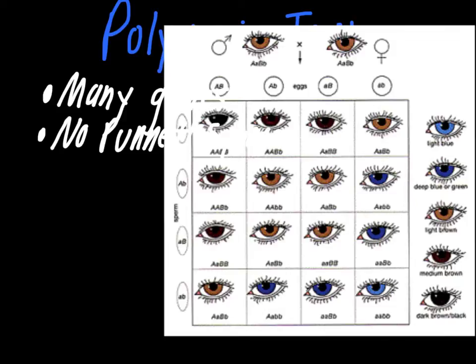With a problem like this, you could technically do a Punnett square, but it becomes much more complicated than the problems we've been working on in class. Not to mention, we're not exactly sure this is even how eye color is controlled — there's still some debate genetically over how some of the more complicated traits, especially in people, are actually passed on.